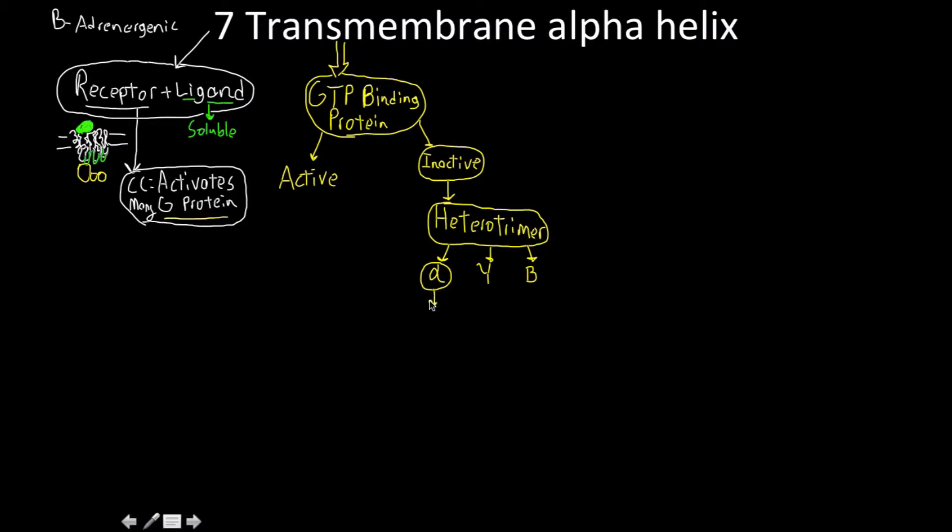So for the alpha subunit, this is the one that's going to be bound to, and if it's inactive, it's going to be bound to something known as GDP. Now both the alpha and the gamma subunits are covalently attached to the membrane, but they're actually attached to the fatty acid tails of the membrane themselves. So they're covalently attached to the fatty acid tails, and remember when we talked about our definitions of integral versus peripheral proteins.